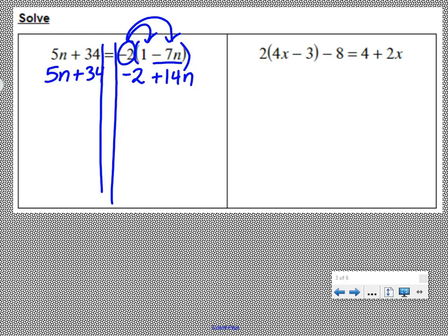Combine like terms. We don't have any like terms to combine, so we get our variables to one side. I like to move the smaller one because then I don't have to work with negatives, so 5n is smaller than 14n. So I'm going to move 5n by doing minus 5n on both sides.